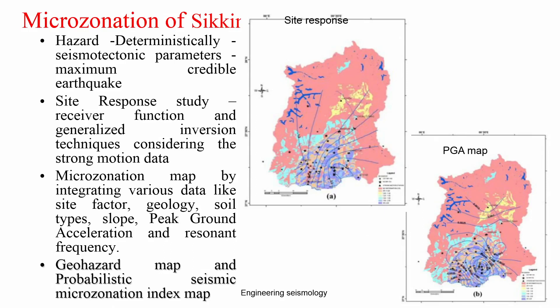The microzonation map was prepared by integrating site factors obtained from microtremor studies, geology and soil type obtained from the Geological Survey of India map, peak ground acceleration, and resonance frequency. The peak ground acceleration was estimated by considering detailed seismic hazard analysis, which we will be discussing in future classes.